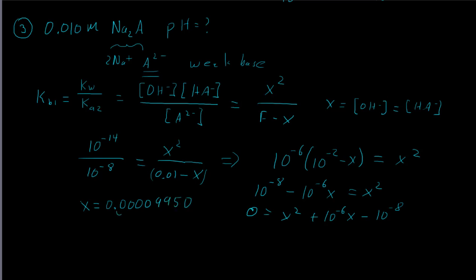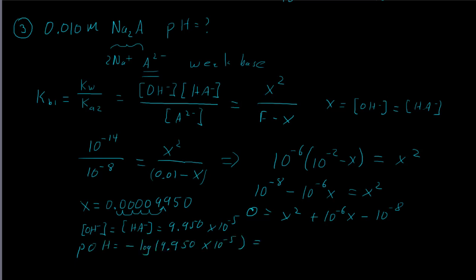That value is 9.950×10⁻⁵. So our OH- concentration and our HA- concentration are both 9.950×10⁻⁵ molar. Taking the negative log gives a pOH of about 4. Since pH plus pOH equals 14, our pH is 14 minus 4, which equals 10. We have a basic solution with a pH of about 10.